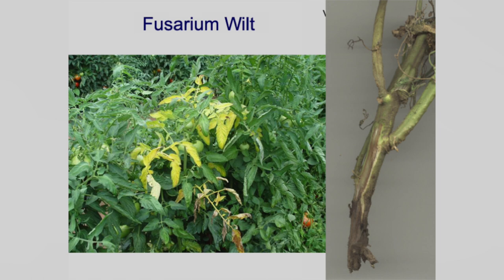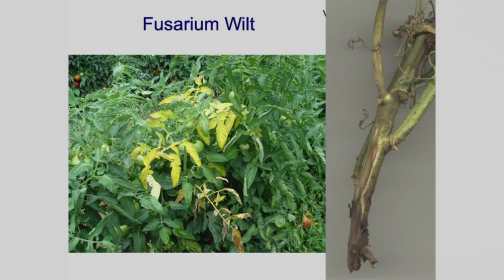We also have Fusarium wilt — a soil disease that gets in the roots and causes brown streaks in the stem. That streak goes up into the upper part of the plant; oftentimes you'll get yellowing on one side, but other times the whole plant will just wilt. In Florida and fresh market tomatoes they fumigate for this. There's resistance to Fusarium wilt but in intensive tomato-producing areas new races can develop that overcome that resistance. Typically with Fusarium you get yellowing before it withers and dies, and usually it starts on one side of the plant.